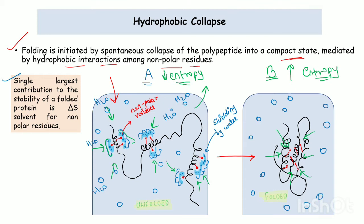So in hydrophobic collapse, we are mainly concerned with the entropy of the solvent. The single largest contribution to the stability of a folded protein is the change in entropy of solvent for the non-polar residues. The solvent causes the shielding effect, and in order to increase its entropy and make the system thermodynamically favorable, there is aggregation of non-polar residues towards the core. The molecules interact with each other to finally attain a folded form, passing through several intermediate states from the unfolded to the native form.